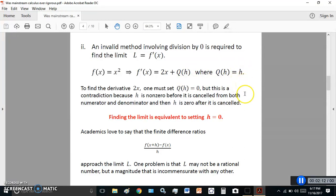But in order to find the derivative of 2x, one must set q(h) equal to zero. But this is a contradiction, because h is non-zero before it is cancelled in the finite difference, and then it is zero after it is cancelled. This is the finite difference here.